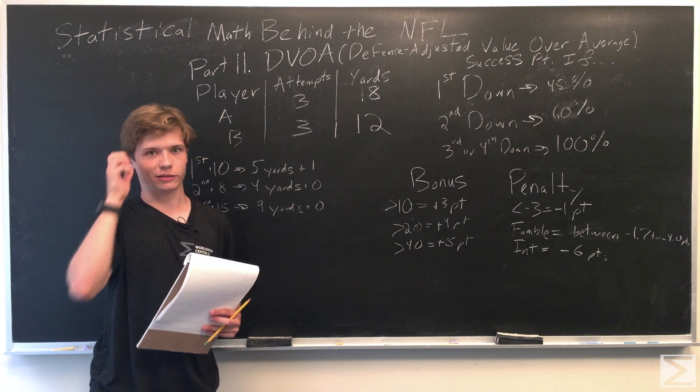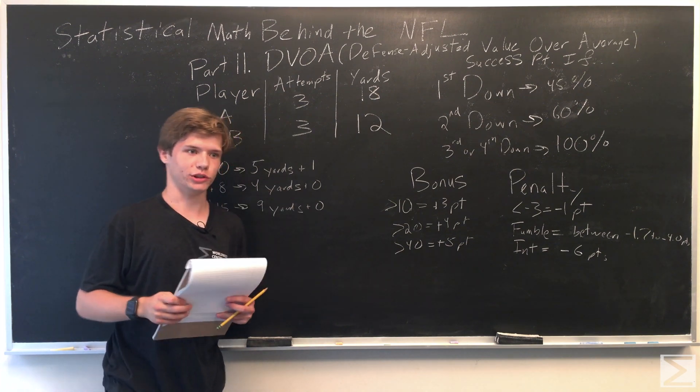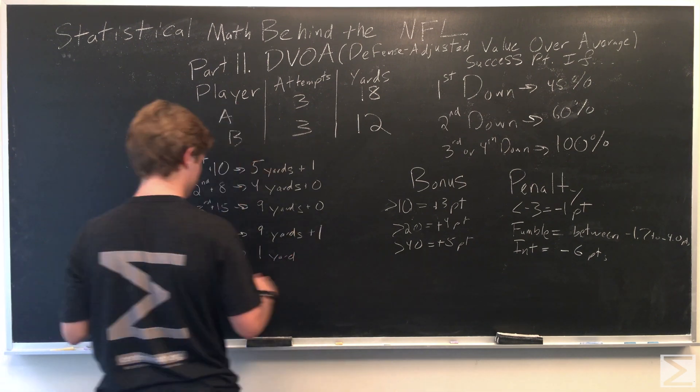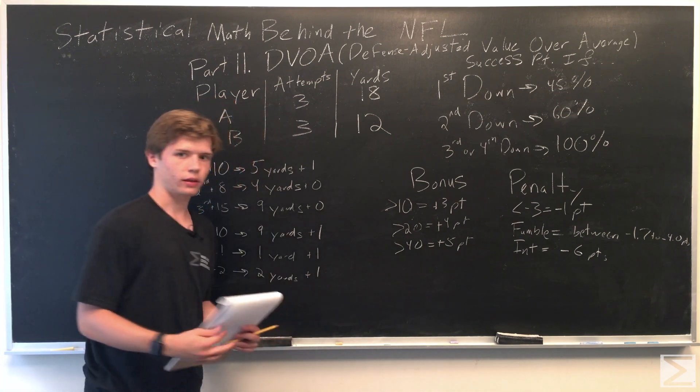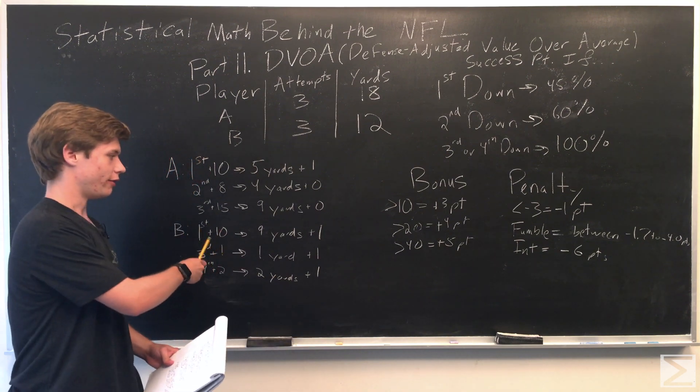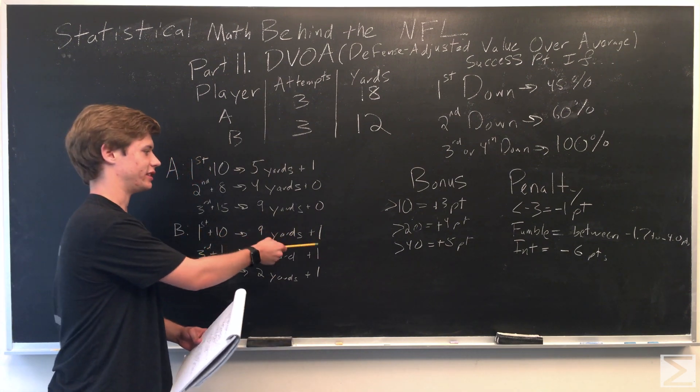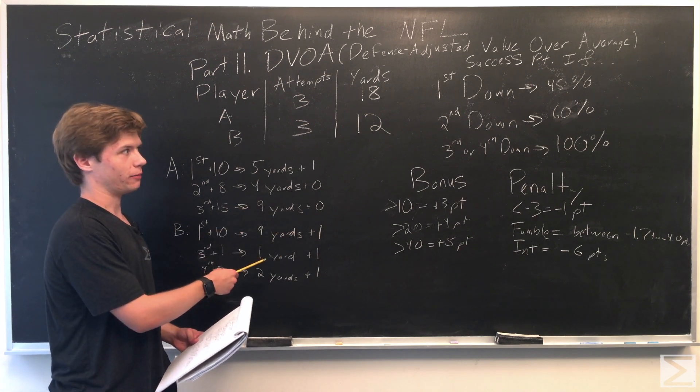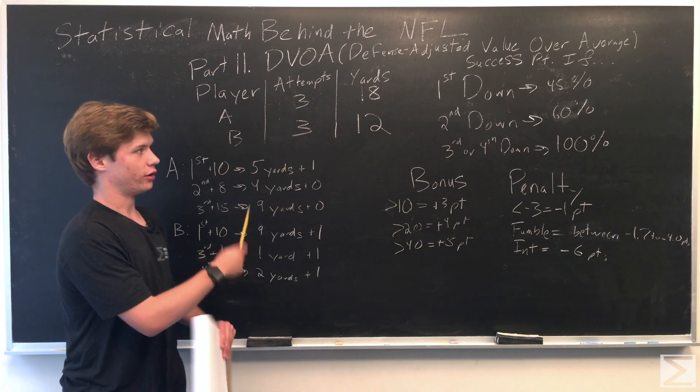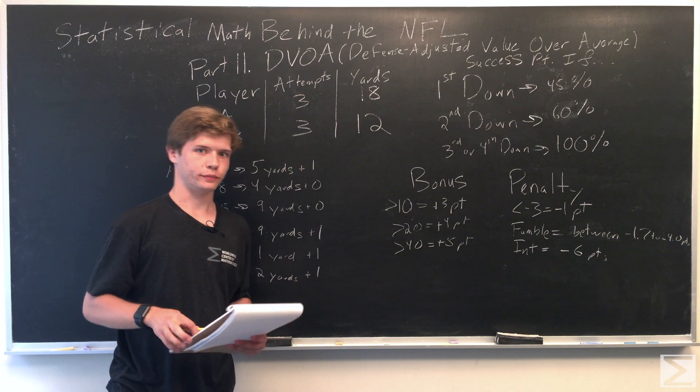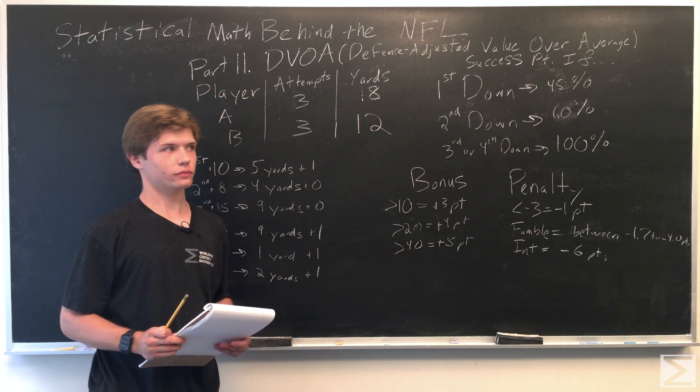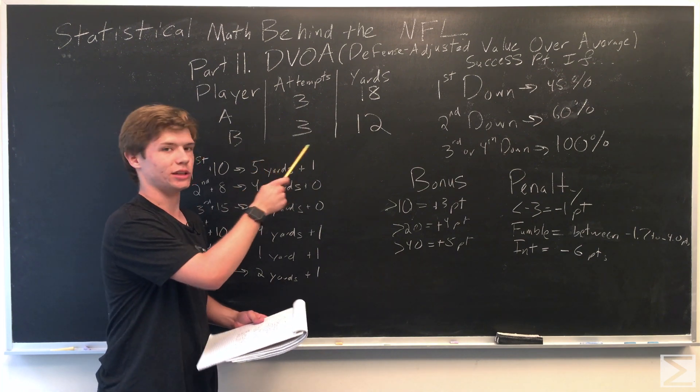As you can see, in these examples, player B in first and 10 ran for nine yards. So that's a success point. On third and one, he ran for one yard, which is a conversion. So that's another point. And on fourth and two, got two yards. So another success point. So now we have the success points. And we're still saying the average is 1.5. So now we'll calculate what each of their DVOA is for this number of plays.